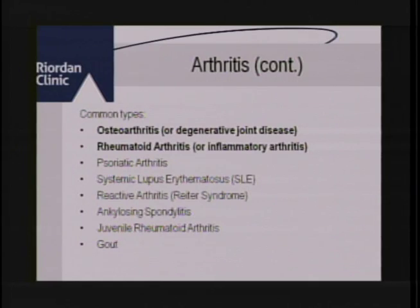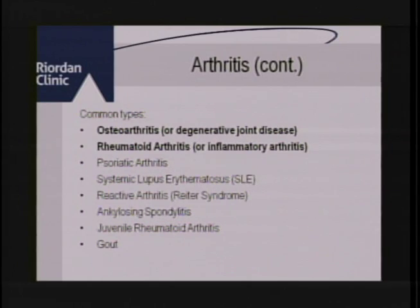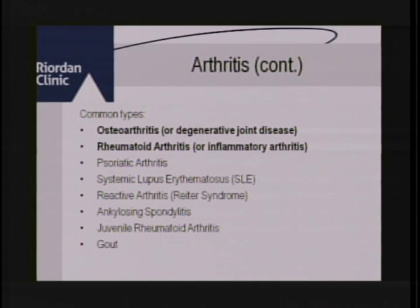The second common type is rheumatoid arthritis, also commonly known as inflammatory arthritis. This is where the body's own immune system actually attacks the fluid in the synovial membranes that surround each of our joints — so it's actually the body attacking itself. When this occurs, it typically occurs all over the body and on both sides at the same time.